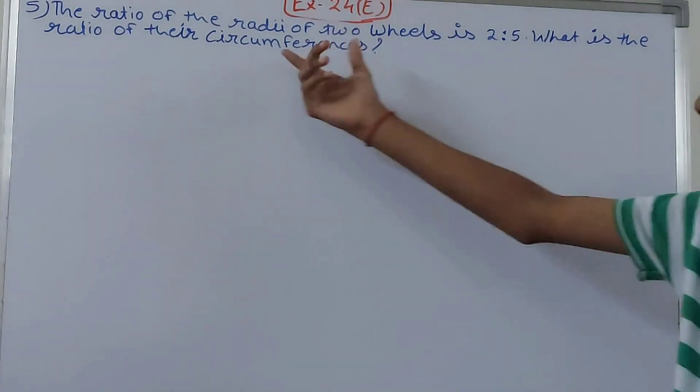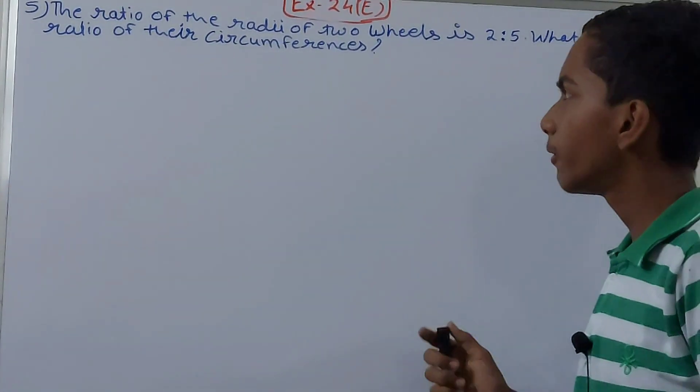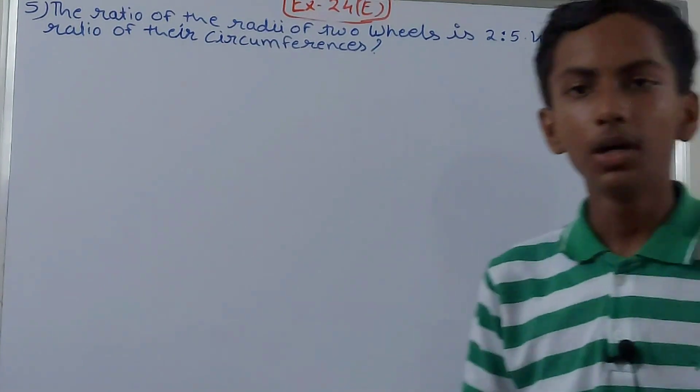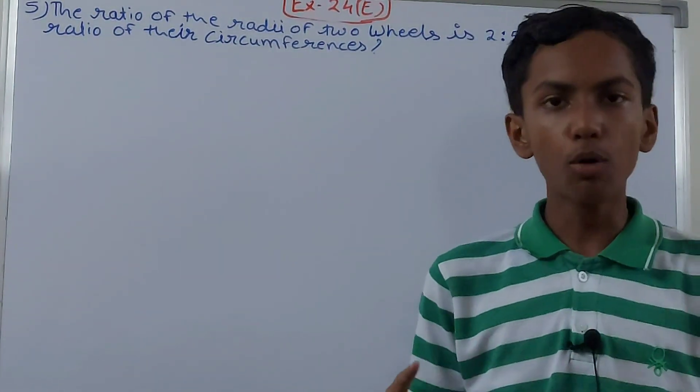It says: What is the ratio of the radii of two wheels if it is 2 is to 5? What is the ratio of their circumferences? Radii is the plural of radius.